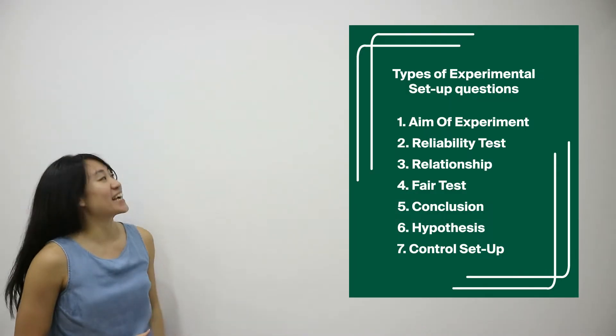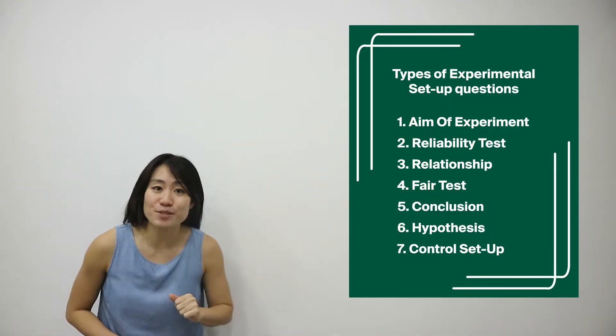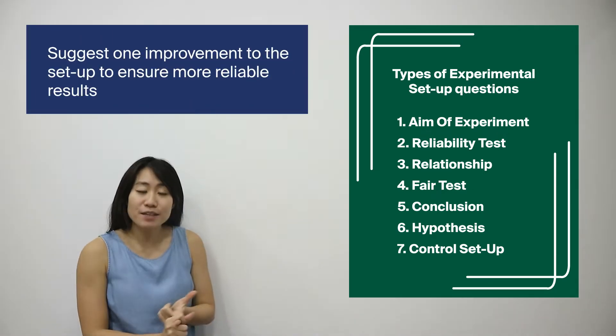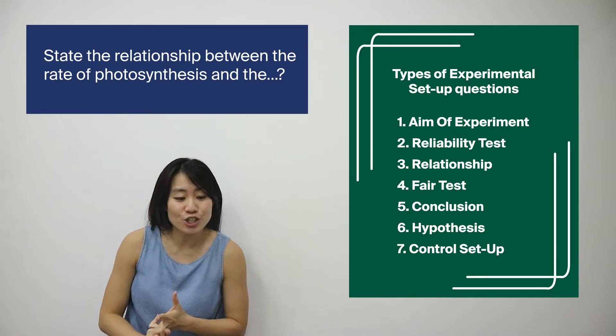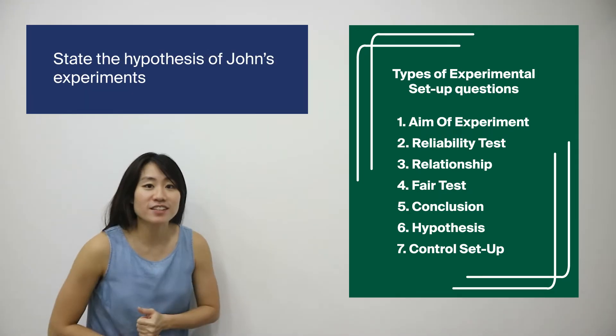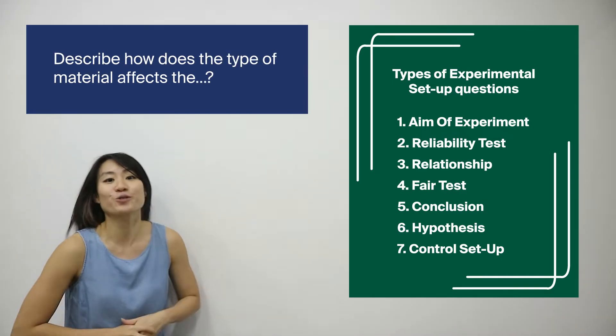Right here you will see that there are seven different types of experimental setup questions. They are the aim of experiment, reliability, relationship, fair test, conclusion, hypothesis, and of course the control setup.